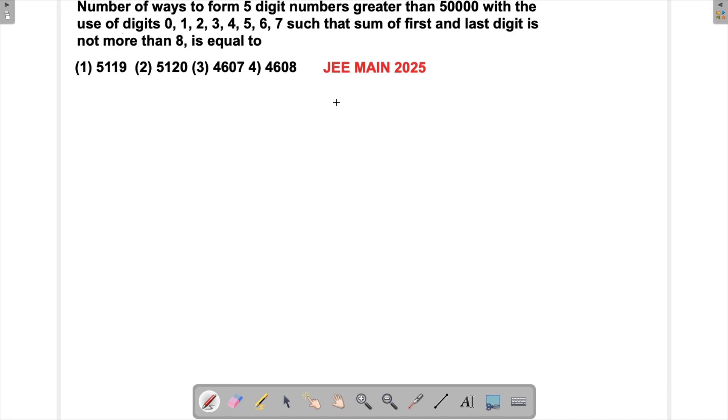Let's solve the problem from JEE Main 2025. This is a permutation and combination problem. The question asks for the number of ways to form five-digit numbers greater than 50,000 with the use of digits 0, 1, 2, 3, 4, 5, 6, 7, such that the sum of first and last digit is not more than 8.